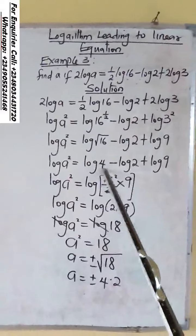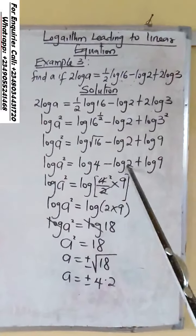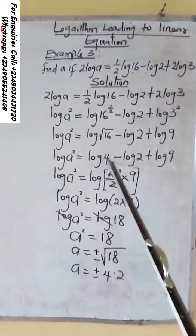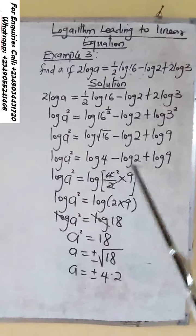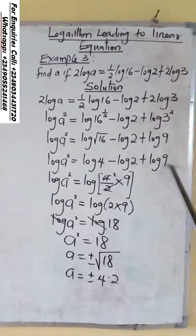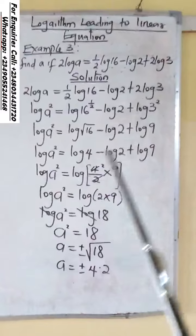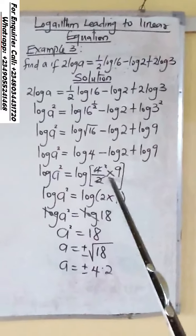So, it's going to be 4 divided by 2 times 9. Because subtraction turns to division, addition turns to multiplication.